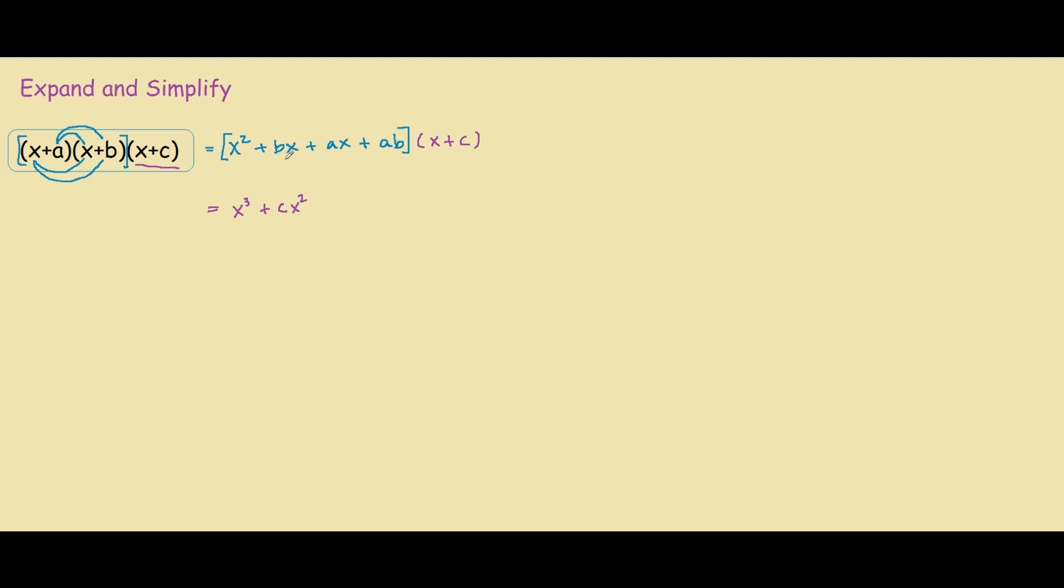Now we move on to this term, bx times x is bx squared, plus bx times c is bcx.